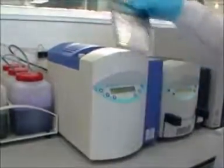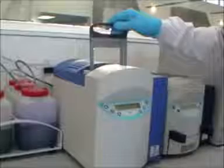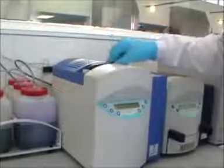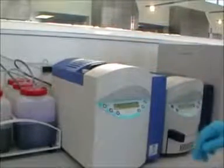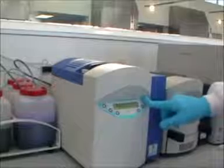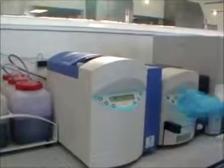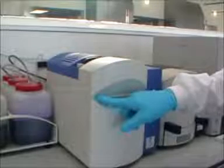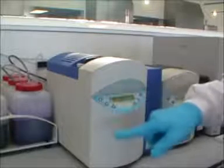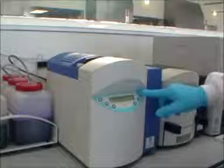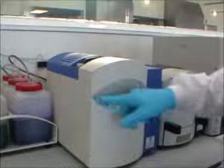This holder with the gel is then inserted into the slot in the top of the SAS-2 unit. Again this unit is programmable with specific stain protocols. Acid violet for the acid gel. Acid blue for the alkaline gel. And specific de-stain protocols for these two types of gel.